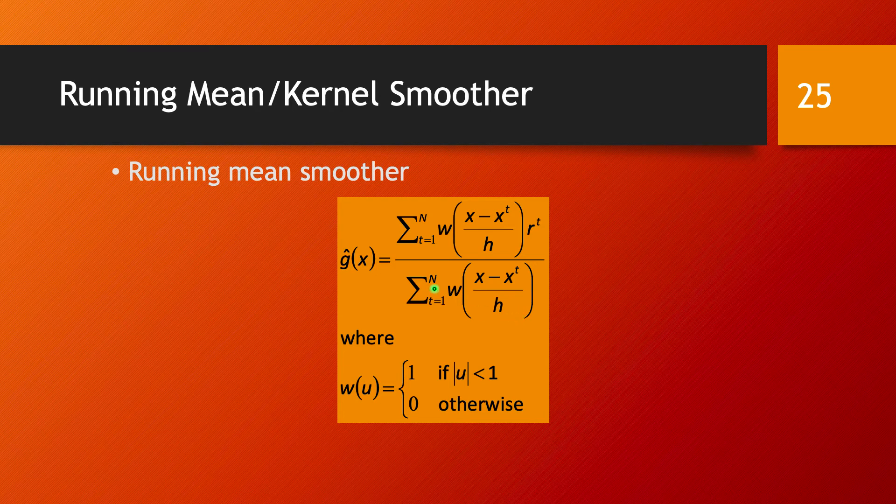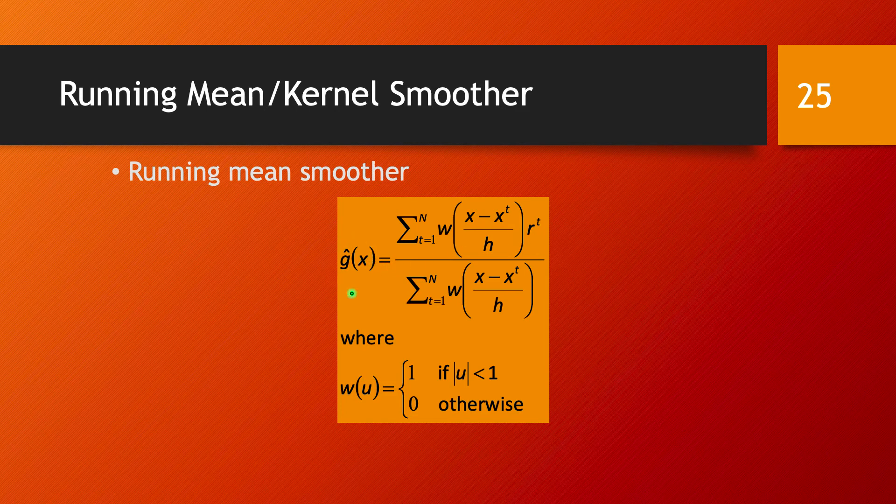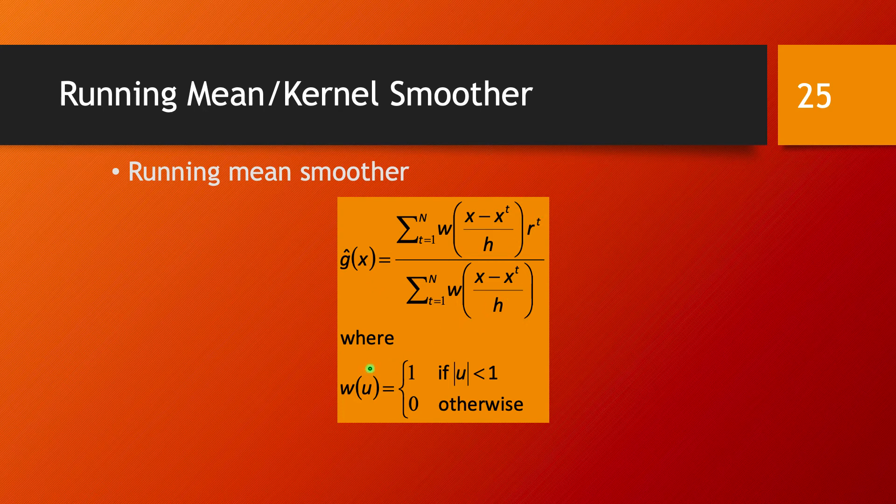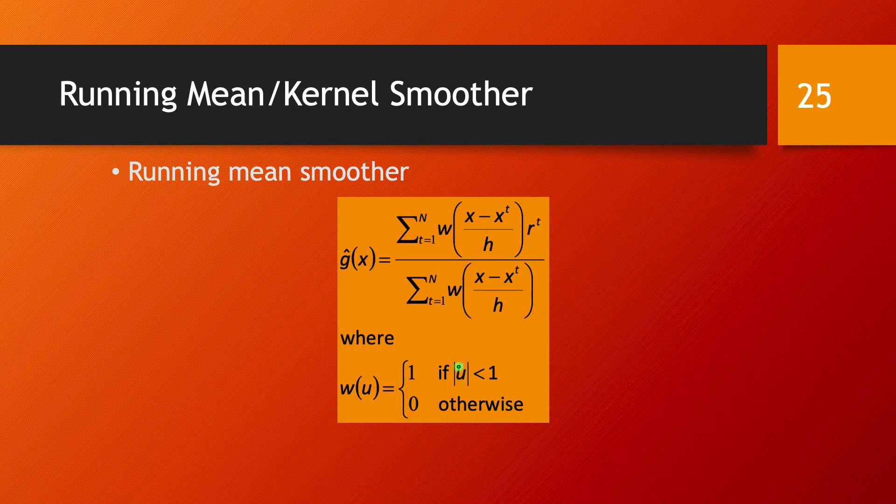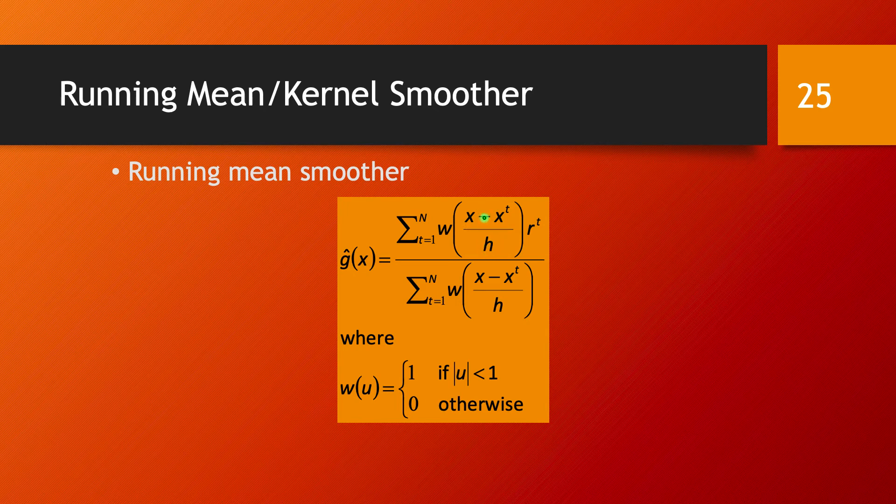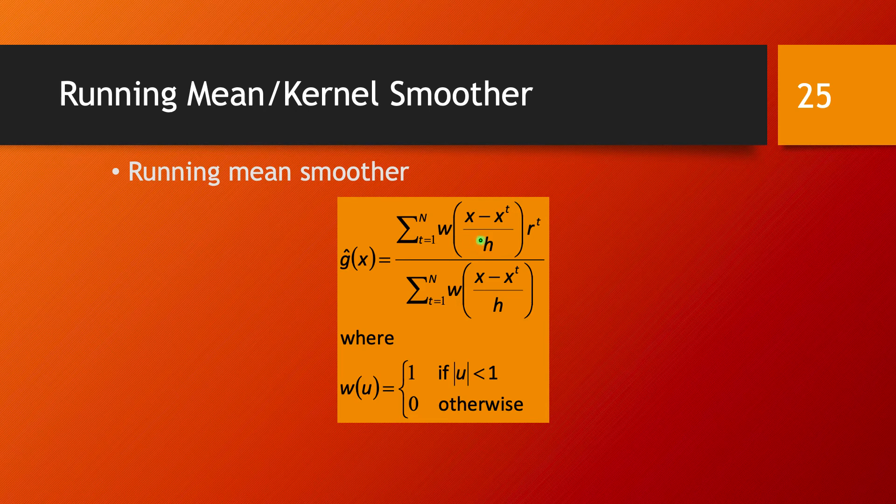What this becomes is G of X with this function W of U, which is simply 1 if you have an argument that has a module less than 1 and 0 otherwise. In this sum you are applying it to X minus XT over H. So overall, what this is going to do is select all the data points that are sitting at a distance at most H from X.